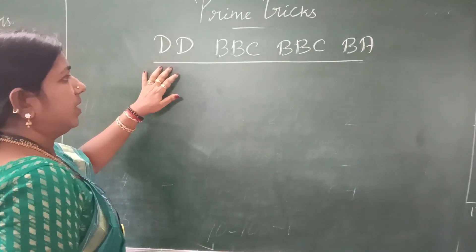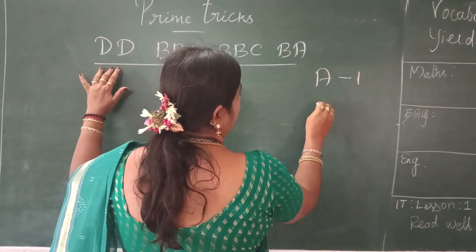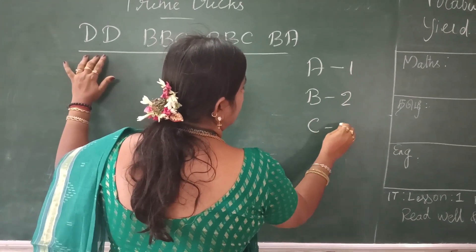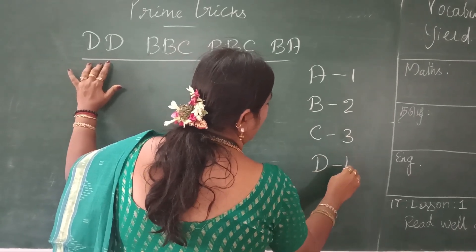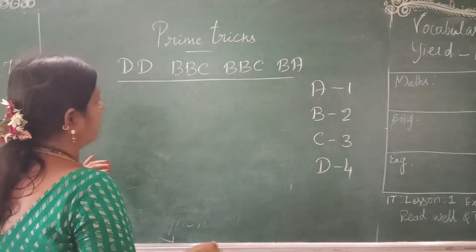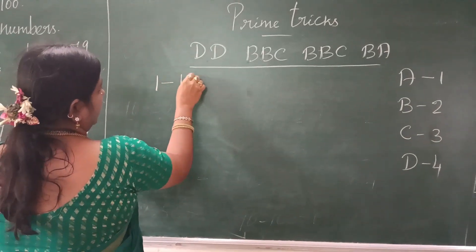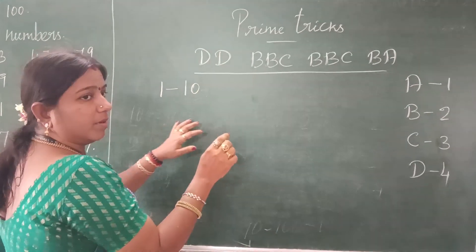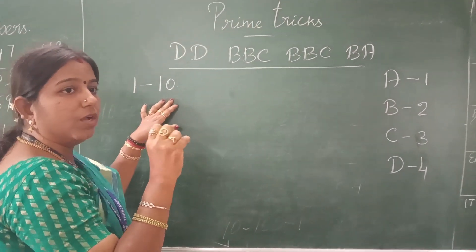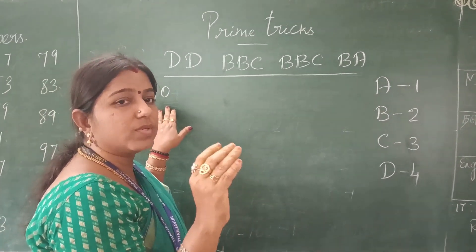What does it mean? A is represented by 1, B is represented by 2, C is represented by 3, and D is represented by 4. Now look at the board — let me check 1 to 10, how many prime numbers are there. From 1 to 10 the prime numbers are: 2, 3, 5, 7.